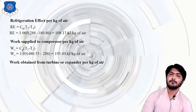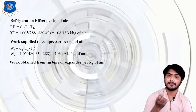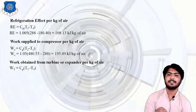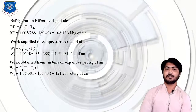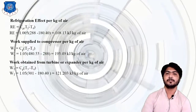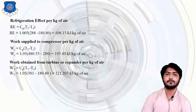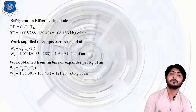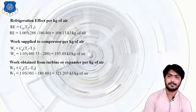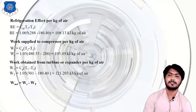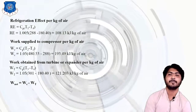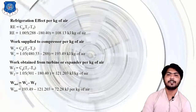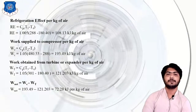The turbine or expander produces work that is supplied back to the compressor. Turbine work = CP × (T3 − T4) = 1.005 × (301 − 180.40) = 121.203 kJ/kg of air. The net work input to the system is: Wnet = Wcompressor − Wturbine = 193.49 − 121.203 = 72.28 kJ/kg of air.